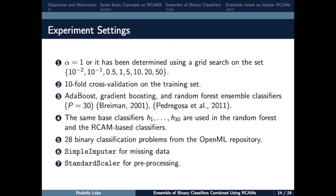The same random forest estimators are used in the RCAM model. We use 28 binary classification problems from the OpenML repository. We use the simple imputer library from sklearn for the missing values, and the standard scaler library to preprocess this data. Therefore, each feature is normalized by subtracting the mean and dividing by the standard deviation.